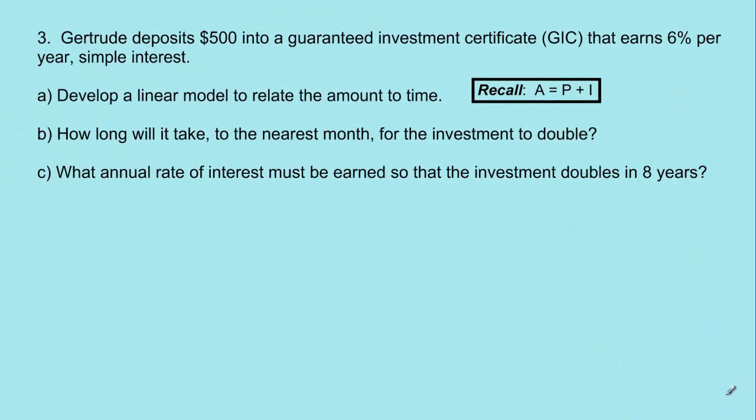Here's one final example to look at. Gertrude deposits $500 into a guaranteed investment certificate, or otherwise known as a GIC. You may have put money, or maybe your parents or your grandparents have put money for you, into something called a GIC. Essentially, it's an account that you can put money in that earns interest over time that's different than a savings account. You can't take that money out until that time is expired. So $500 got put into a GIC, and it earns 6% per year of simple interest.